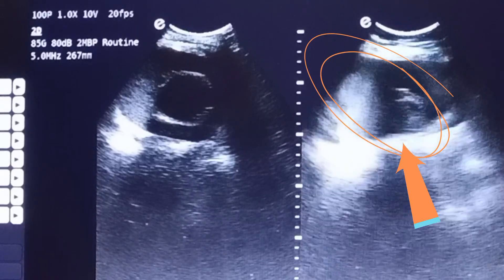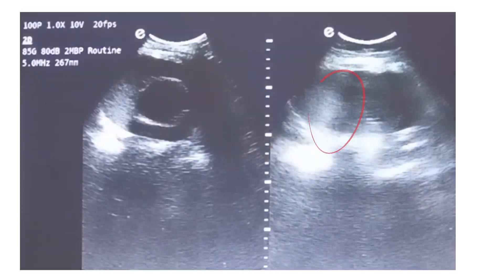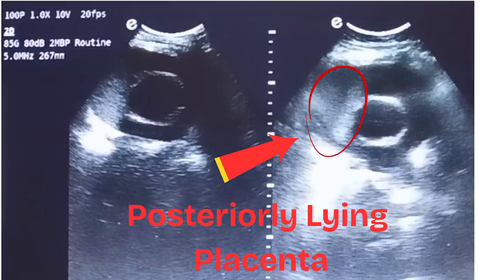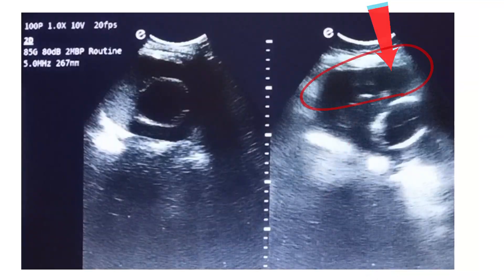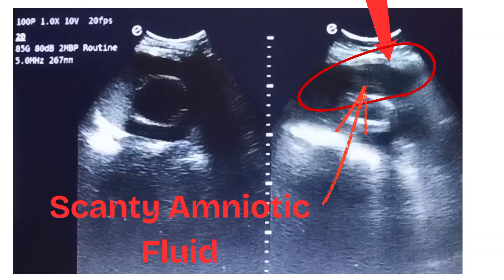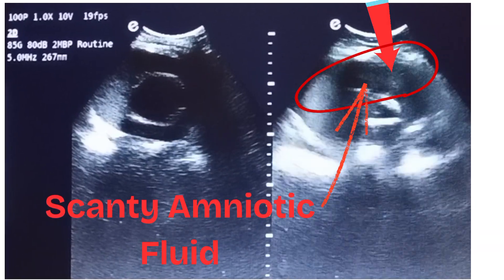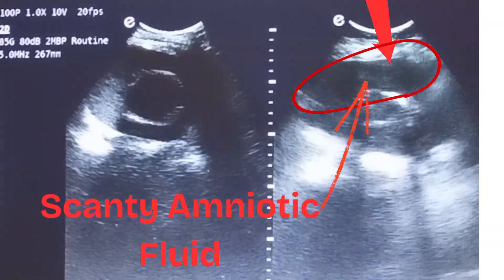Fetal chest can be seen inside the oval lines. The placenta is posteriorly lying, as seen here in the ultrasound inside the circle. Decreased liquor or amniotic fluid can be seen where the arrows are pointing to the black area.